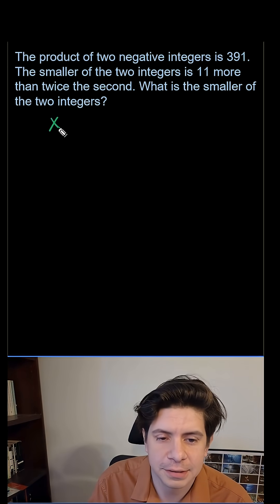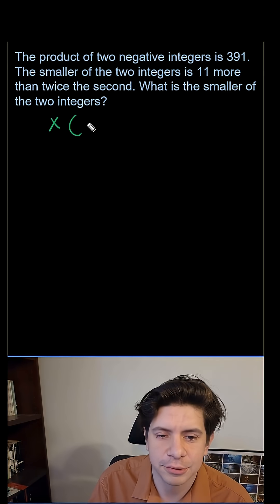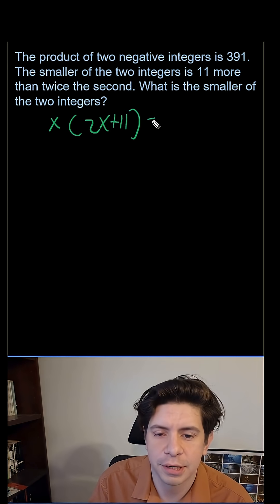So say the bigger value is x, that means the smaller value is going to be 2x plus 11, and they multiply to 391.